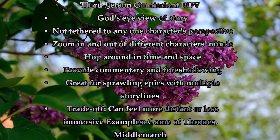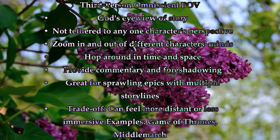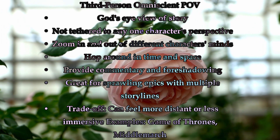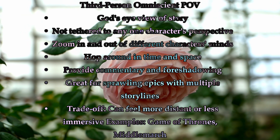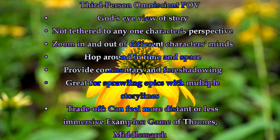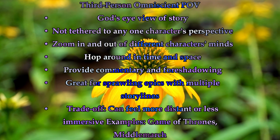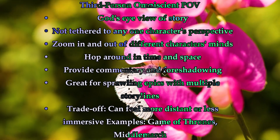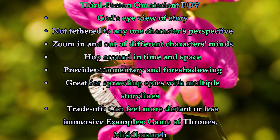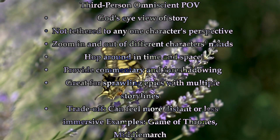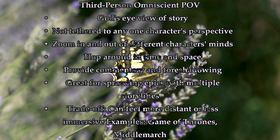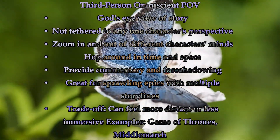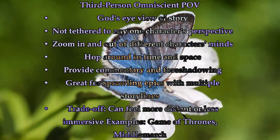And if you really want that God's eye view, third-person omniscient is the way to go. With this POV, you're not tethered to any one character's perspective. You can zoom in and out of different characters' minds, hop around in time and space, provide commentary and foreshadowing as an all-knowing narrator. It's a great fit for sprawling epics with multiple intersecting storylines and large casts, like Game of Thrones or Middlemarch. The trade-off is that omniscient can sometimes feel more distant or less immersive than limited perspectives. You have to work harder to make each character's POV feel distinct and engrossing, even as you're weaving them together into a cohesive whole.